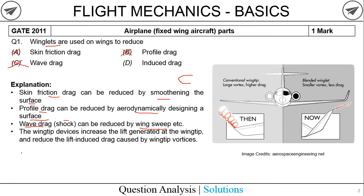The option we are left with is induced drag. Winglet devices increase the lift generated at wing tips and reduce the lift-induced drag caused by wing tip vortices. Without a winglet, wingtip vortices form around the wing tip; with a winglet integrated, the vortices are reduced compared to the configuration without winglets. This avoids lift-induced drag. Confirmed by the answer key: winglets reduce induced drag.